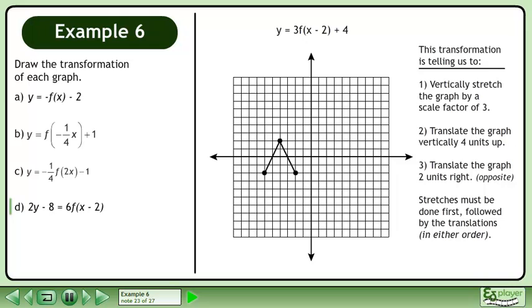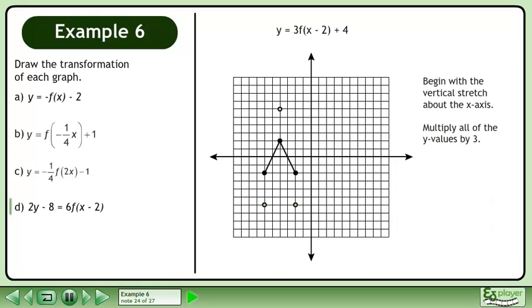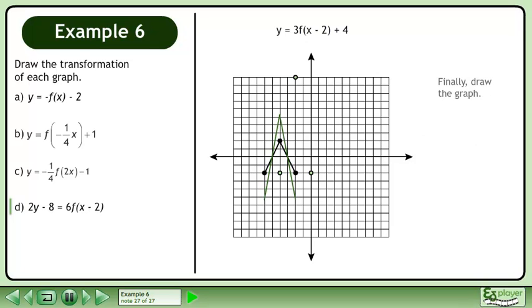Stretches must be done first, followed by the translations in either order. Begin with the vertical stretch about the x-axis — multiply all of the y-values by 3. Now apply the upwards vertical translation — add 4 to all of the y-values. Next, apply the rightwards horizontal translation — add 2 to all of the x-values. Finally, draw the graph.